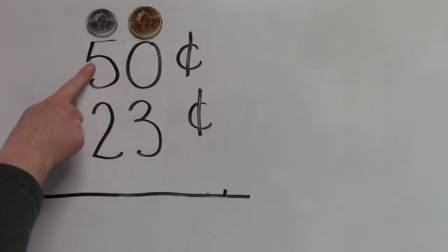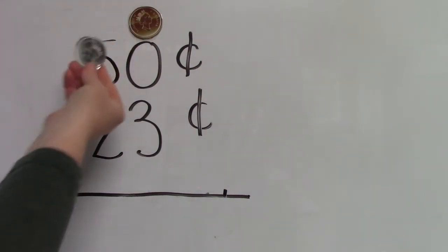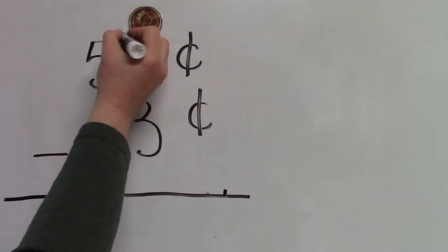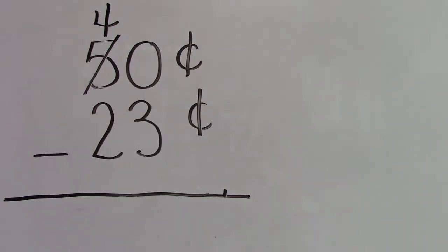So we're gonna have to do some trading. We're gonna trade one of the dimes in our dimes place for some pennies. If we traded one of the dimes and instead of having five dimes we said we're gonna have four dimes. For how many pennies could we trade that dime? Did you say ten?